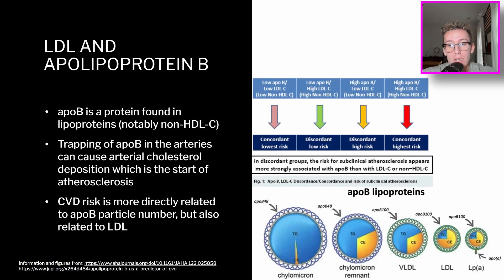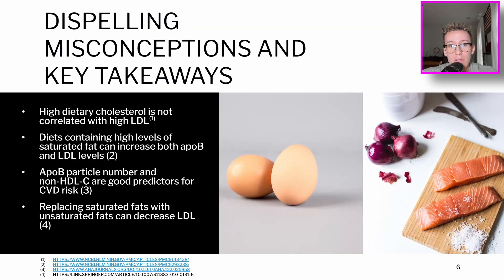So to dispel some misconceptions and to give some key takeaways, again, high dietary cholesterol is not correlated with high LDL. This might be because when you eat high levels of cholesterol, our body auto-regulates it and prevents our body from exceeding ridiculous levels of cholesterol. However, diets containing high levels of saturated fat can increase both the apoB and LDL levels. This is probably not great, as remember, we know that high levels of apoB and LDL levels increases your risk of cardiovascular disease and atherosclerosis.